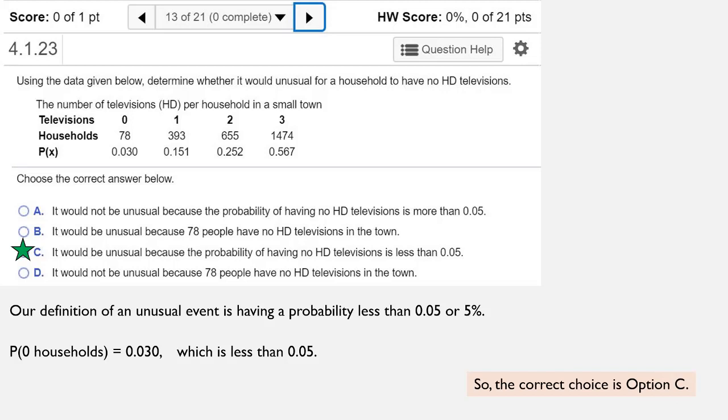So the correct choice here is option C. It would be unusual because the probability of having no HD televisions is less than 0.05. And that's your answer.